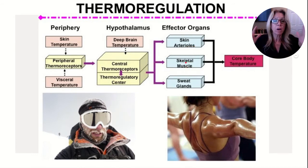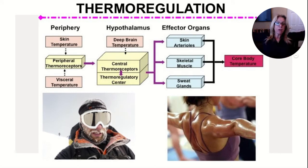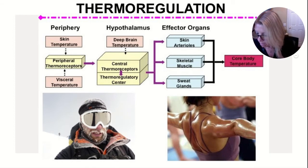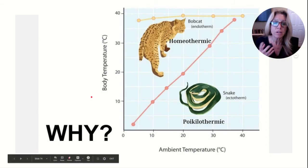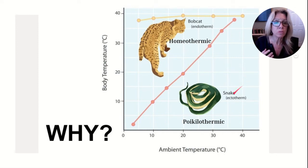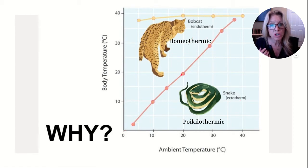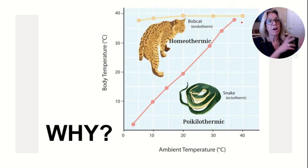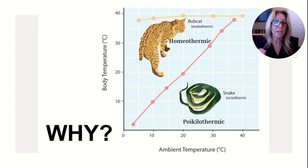Muscles can contract to make our bodies smaller when cold — less surface area per volume — and spread out when trying to cool off. Poikilothermic versus homeothermic: the old school names are cold-blooded and warm-blooded, or ectotherms and endotherms. Poikilothermic means your temperature changes with the environment — if it's colder, you're colder; if hotter, you're hotter.